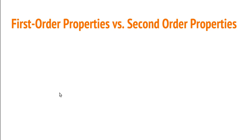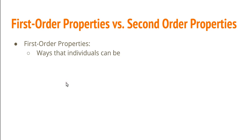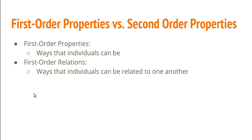Now we're in a position to state what the difference between first and second order properties is. A first order property is just a way that some individual could be. So baldness is a first order property, being a US president is a first order property, being red is a first order property, and so on. First order relations are just ways that individuals can be related to one another — being to the left of, being older than, being taller than are all first order relations.